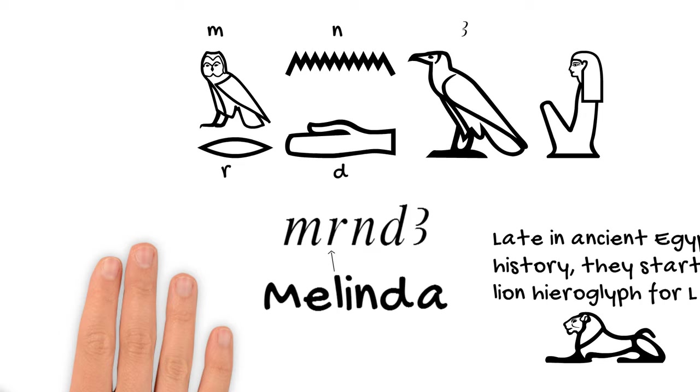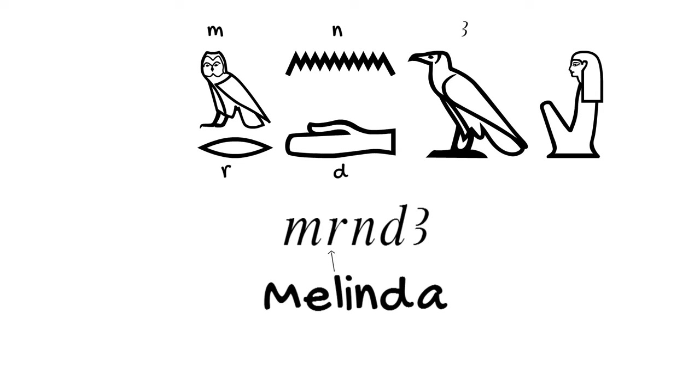Next, you'll notice that I did not use any hieroglyphs to represent an equivalent for the E and the I in my name. This is of course because of there not being any vowels in Egyptian.